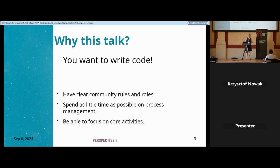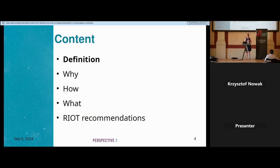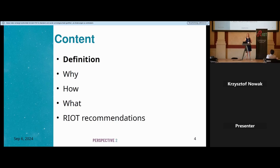Why am I giving this talk? You want to write code, and if you have clear community roles and rules, you can spend as little time as possible on process management and focus on core activities — writing code to do cool stuff. I'll take you through the definition of governance, why it's important, how to do it, and some practical recommendations.